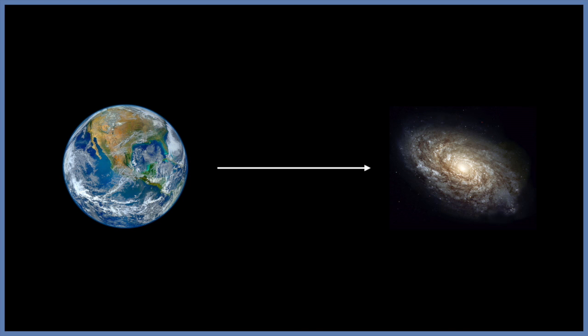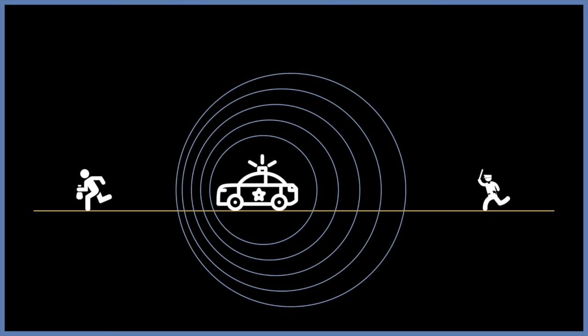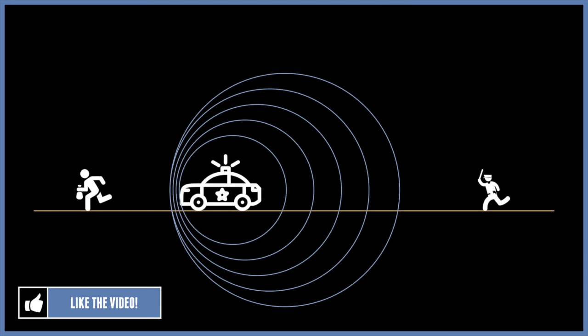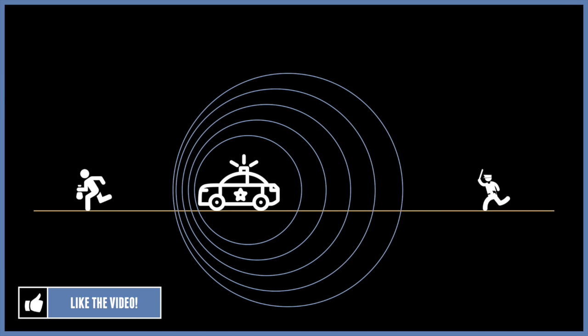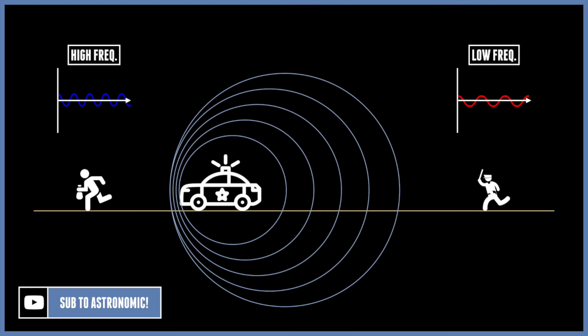To understand what cosmic redshift is, we must think about sound. A great example of this is a police car. You hear its siren because the waves travel through the air into your ear. If the police car is moving, then the sounds in front of it are compressed and create a higher frequency sound. And the sound waves behind it are stretched out, creating a lower frequency sound. As the police car passes in front of you, you would hear the familiar Doppler shift.